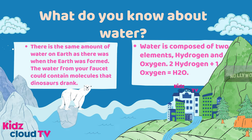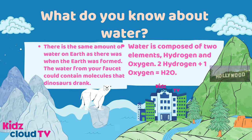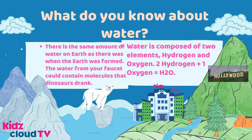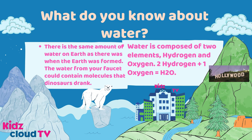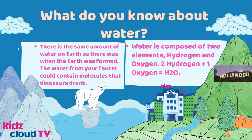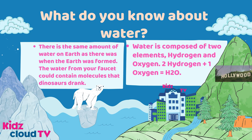What do you know about water? First and foremost, there is the same amount of water on Earth as there was when the Earth was formed. The water from your faucet could contain molecules that dinosaurs drank. Secondly, water is composed of two elements, hydrogen and oxygen — two hydrogen, one oxygen: H2O.